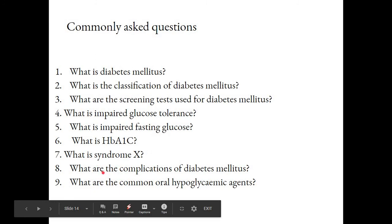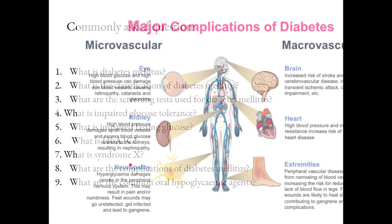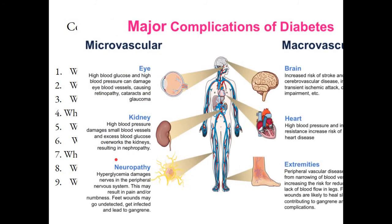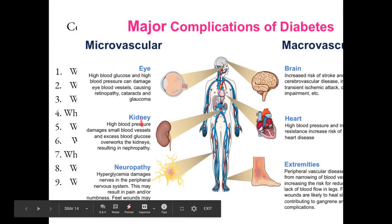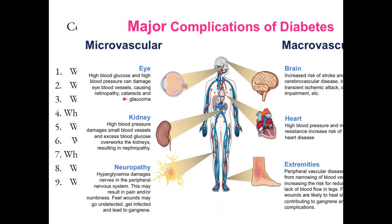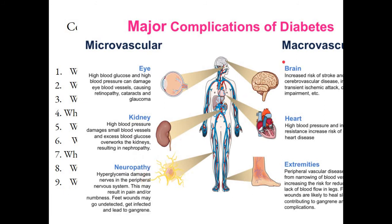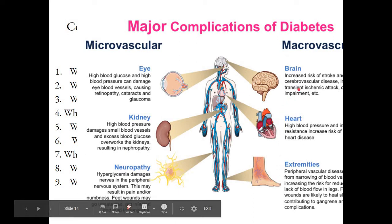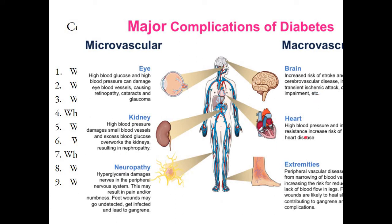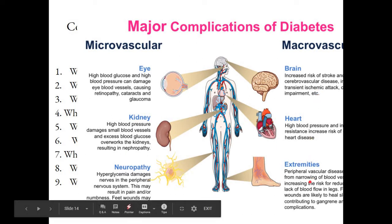What are the complications of diabetes mellitus? They are divided into microvascular and macrovascular. Microvascular complications involve the eye, kidney, and nerves — causing retinopathy, nephropathy, and neuropathy respectively. Macrovascular complications affect the brain, heart, and extremities — causing stroke or transient ischemic attack, heart attacks, and peripheral vascular disease respectively.